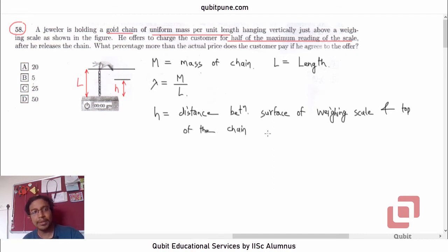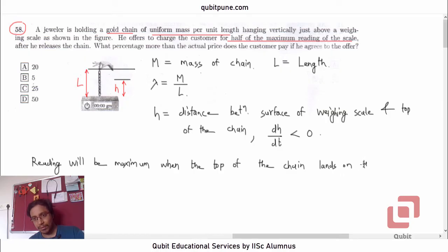Observe that this is going to be a decreasing function of time, so dh/dt is going to be negative. The reading will be maximum when the top of the chain lands on the surface. This is because the whole chain exerts its weight.